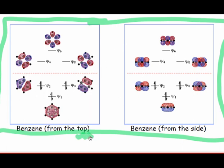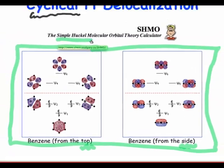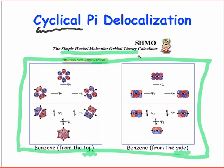On this slide, you'll see two different views of the molecular orbitals of benzene, C6H6. These were constructed using a simplified version of the Linear Combination of Atomic Orbitals, or LCAO, procedure, called the simple Huckel molecular orbital method.